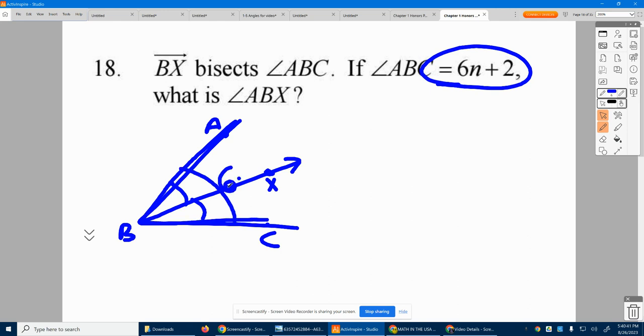Well that means each of these pieces is half of 6n plus 2. So if you take 6n plus 2 and cut it in half, that gives you 3n plus 1.